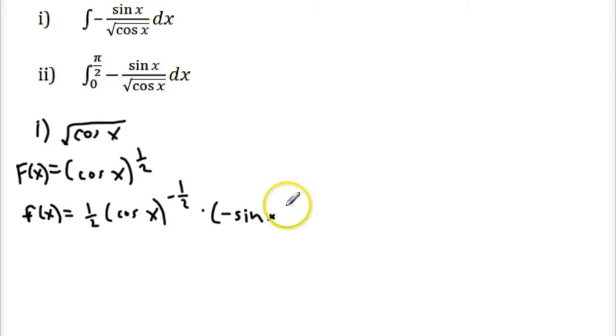And this isn't too bad. If you notice, this is actually kind of close to what we originally have. So if we just rewrite this, that would be 1 half. We could put the negative from there to the front, and the numerator would be sine x, and the denominator would be square root of cos x.